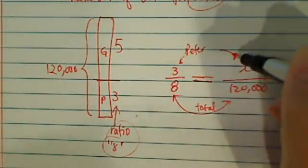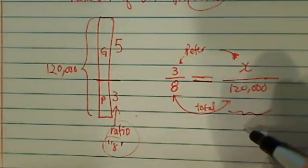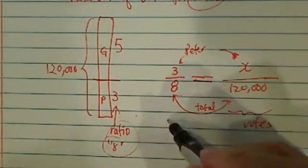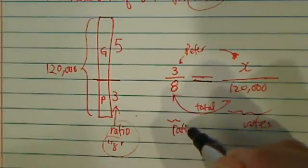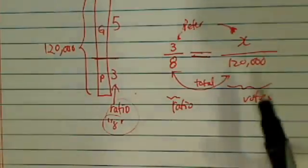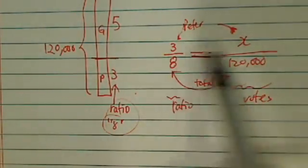So on this side, this is the actual votes. On this side we have ratios. So it's basically apple to apple, orange to orange.